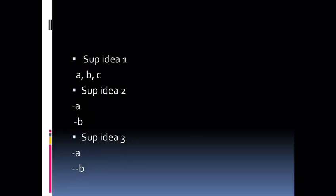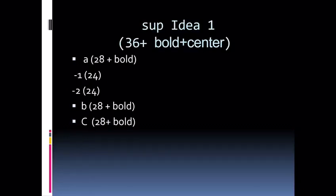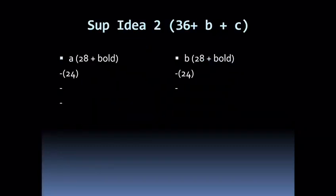For example, we go to supporting idea one. It should be font 36, bold and center. And we have the sections A, B, C. They are going to be in font 28 and bold. And when you have subsections, for example, one and two, they are in 24. They don't have to be one and two. They are just dashes unless they are sequence.